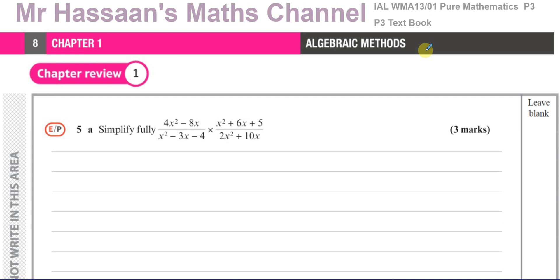This question, part A, says simplify fully — this is question 5, part A, simplify fully. It is a product of these two algebraic fractions.